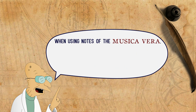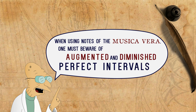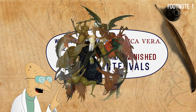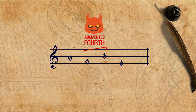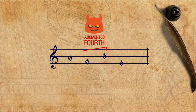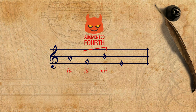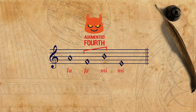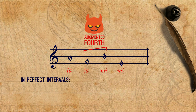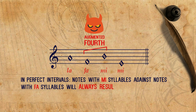When using notes of the musica vera, one must beware of augmented and diminished perfect intervals, due to the fact that they were simply prohibited. For example, in this succession of four notes, there is a bad interval of an augmented fourth between the F and the B. It is common to read in the sources that one should avoid having mi against fa. Indeed, when noticing the solmization syllables of perfect intervals, notes with mi syllables against notes with fa syllables will always result in bad intervals.